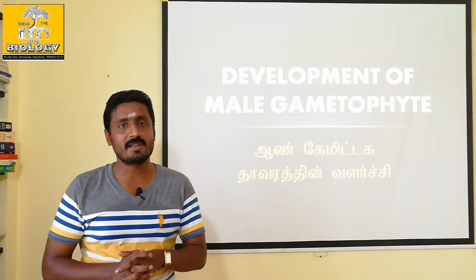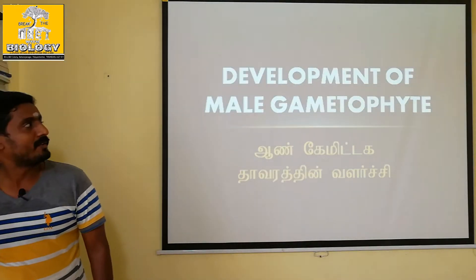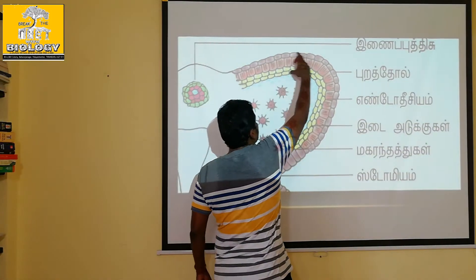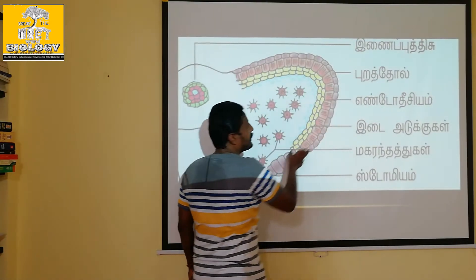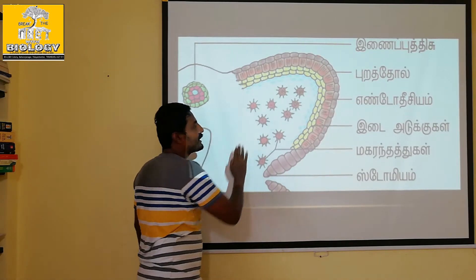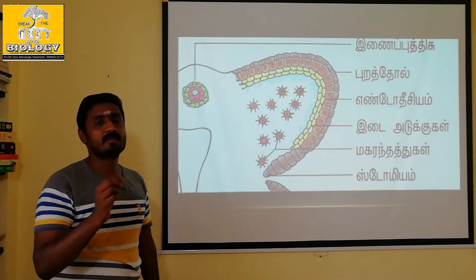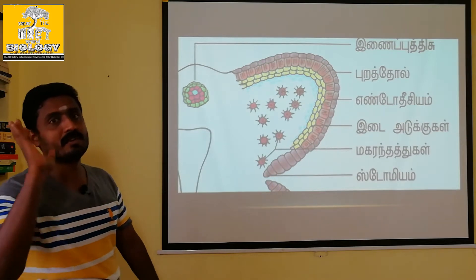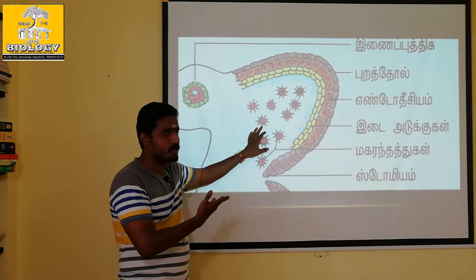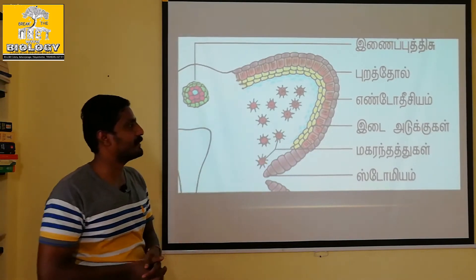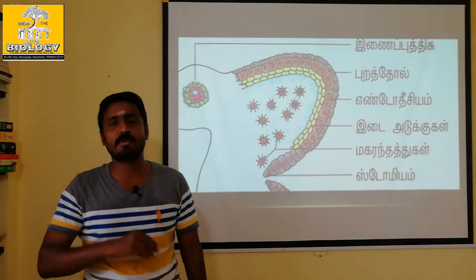There is an anther. The pollen grains are what is called microsporogenesis. The microspore mother cell produces microspores, and that is what microsporogenesis is. Especially, pollen grains are produced through microsporogenesis.